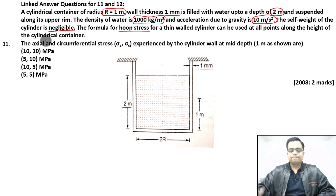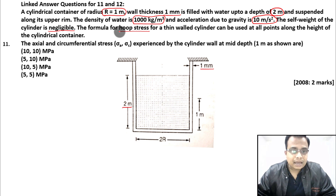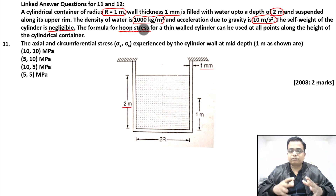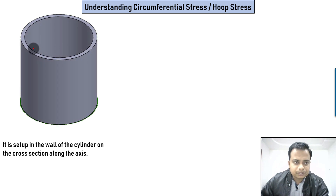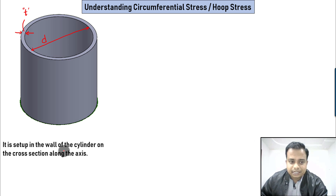This particular chapter is Simple Stress and Strain, but we need to understand thin cylindrical vessels. In that topic we learn the concept of circumferential stress, also known as hoop stress, and longitudinal stress or axial stress. Here is a cylindrical vessel with diameter d and thickness t. Circumferential stress is set up in the wall on the cross-section along the axis.